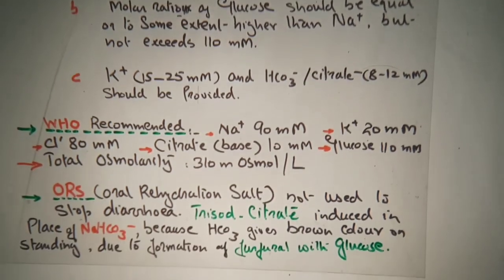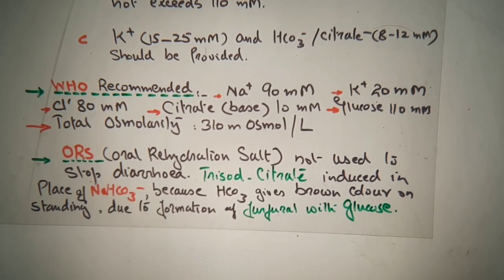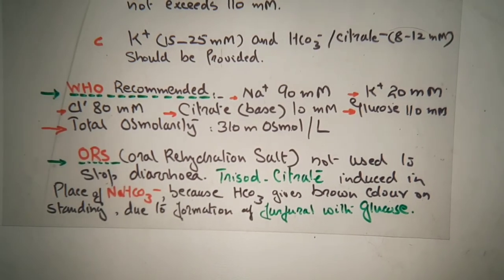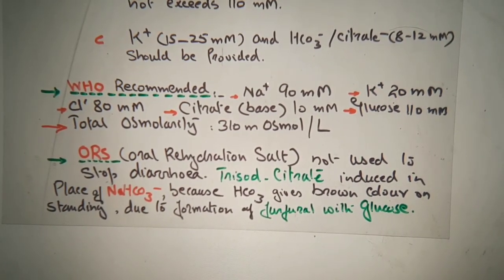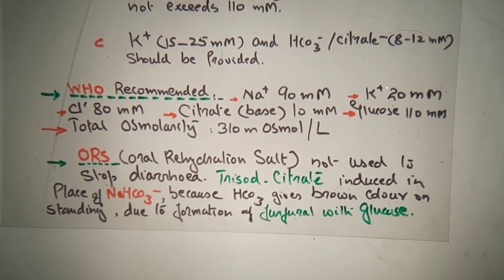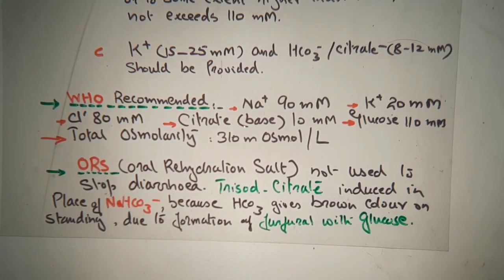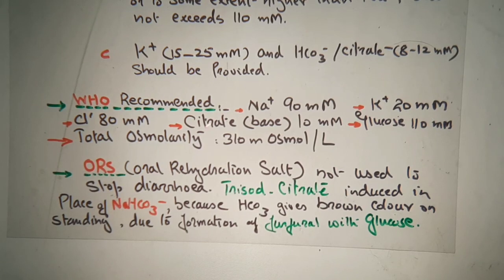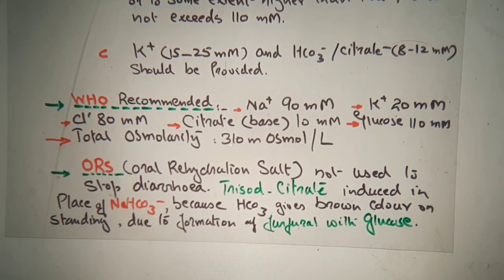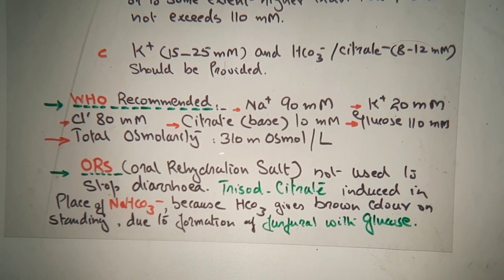WHO recommendation: sodium 90 millimoles, potassium 20 millimoles, chloride 80 millimoles, citrate as a base 10 millimoles, glucose 110 millimoles. Total osmolarity: 310 millimoles per liter. This is the WHO recommended oral rehydration solution composition.